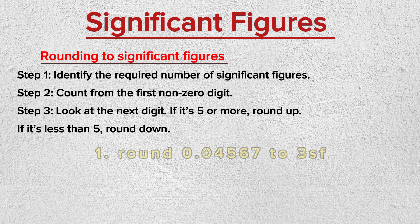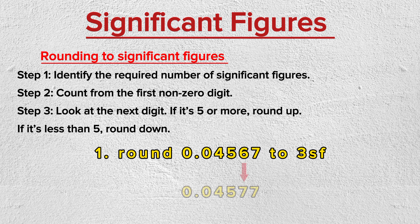Let's try these examples. Round 0.004567 to 3 significant figures. In this example, the first nonzero digit is 4, so we start counting from 4. The first significant digit is 4, the second is 5, and the third is 6. Next, look to the right of the third significant digit. The digit to the right is 7, which is greater than 5, so we round up the third significant digit, which becomes 7. Remove other digits to the right of the third significant digit — this is done if the number is a decimal number.